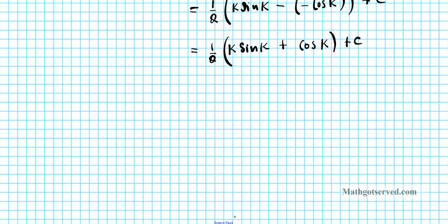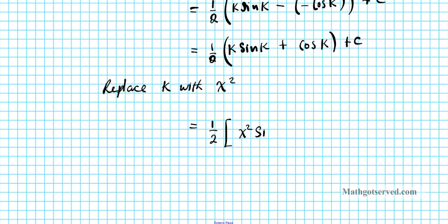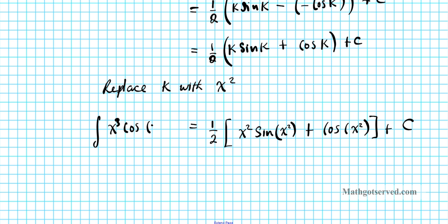Our original problem was in terms of x, and we said k equals x squared. So let's substitute back: replace k with x squared. The final answer for the integral of x cubed cosine(x squared) dx is one-half times x squared sine(x squared) plus cosine(x squared), plus C.